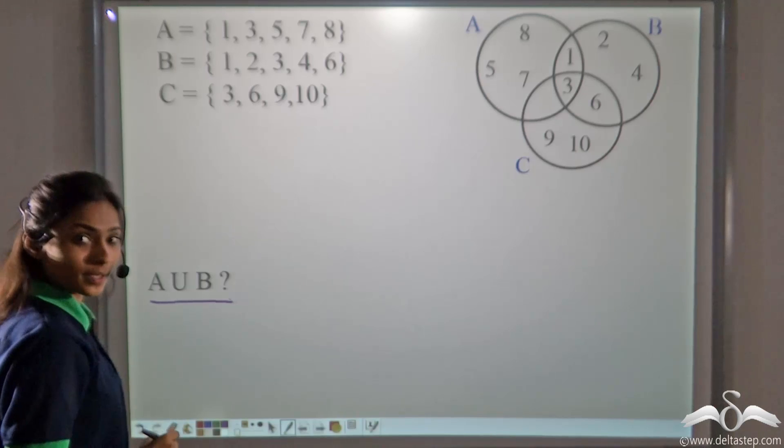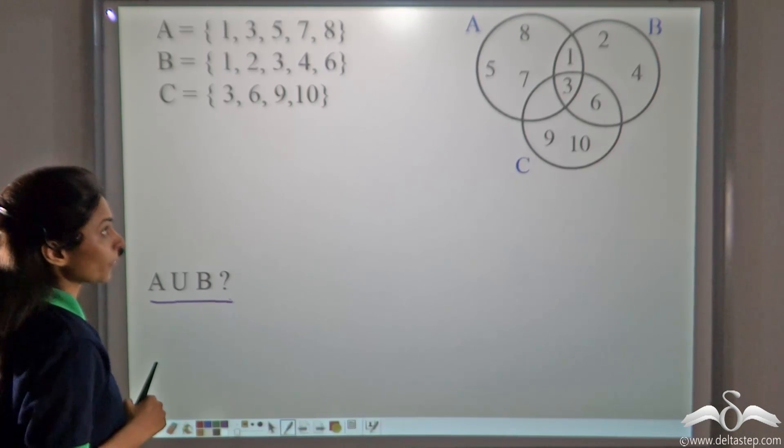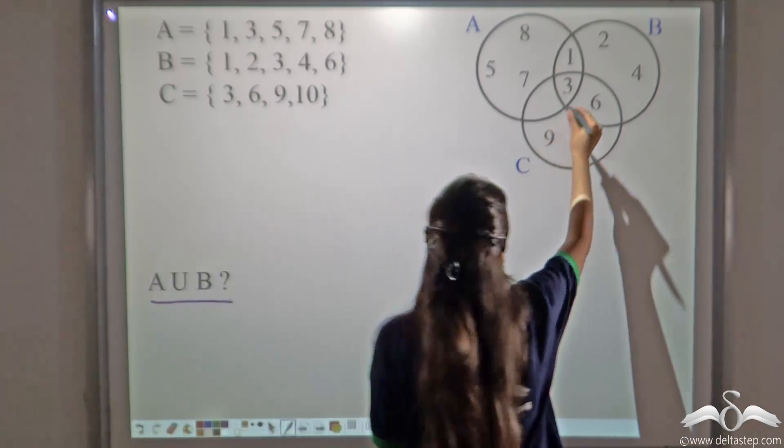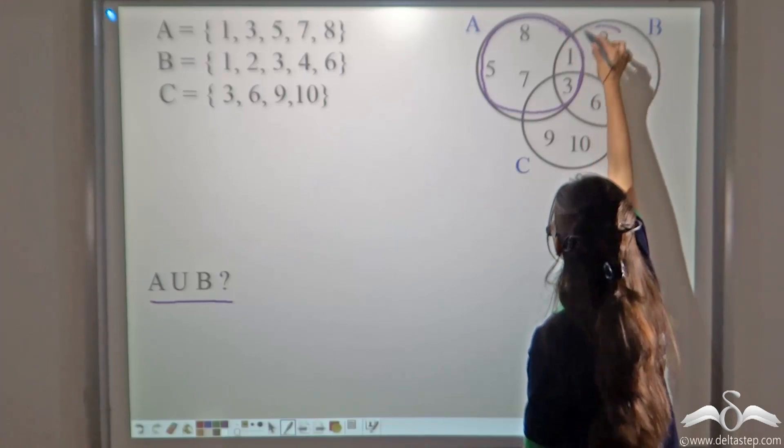Can you tell what is A union B? Solve it for yourself. You know how to do it. Well, A union B can be seen from this diagram.